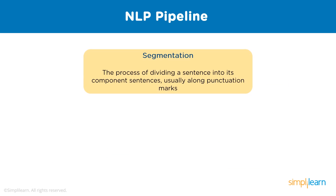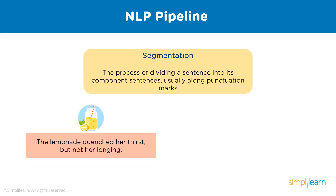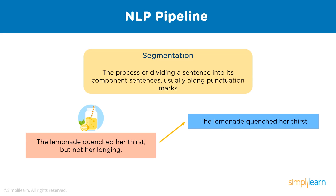The first process of a pipeline is segmentation. Sentence segmentation, or text segmentation, is basically dividing the given text into logically decipherable units of information. We divide the sentence along punctuations like full stops or commas, or along line breaks for HTML files. For example, consider the sentence: 'The lemonade quenched her thirst, but not her longing.' After segmentation, this becomes two sentences: 'The lemonade quenched her thirst' and 'But not her longing.'